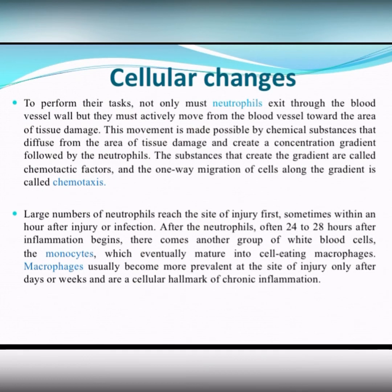After the neutrophils, over 24 to 48 hours after inflammation begins, there comes another group of white blood cells — the monocytes. Macrophages usually become more prevalent at the site of injury only after days or weeks and are a cellular hallmark of chronic inflammation.